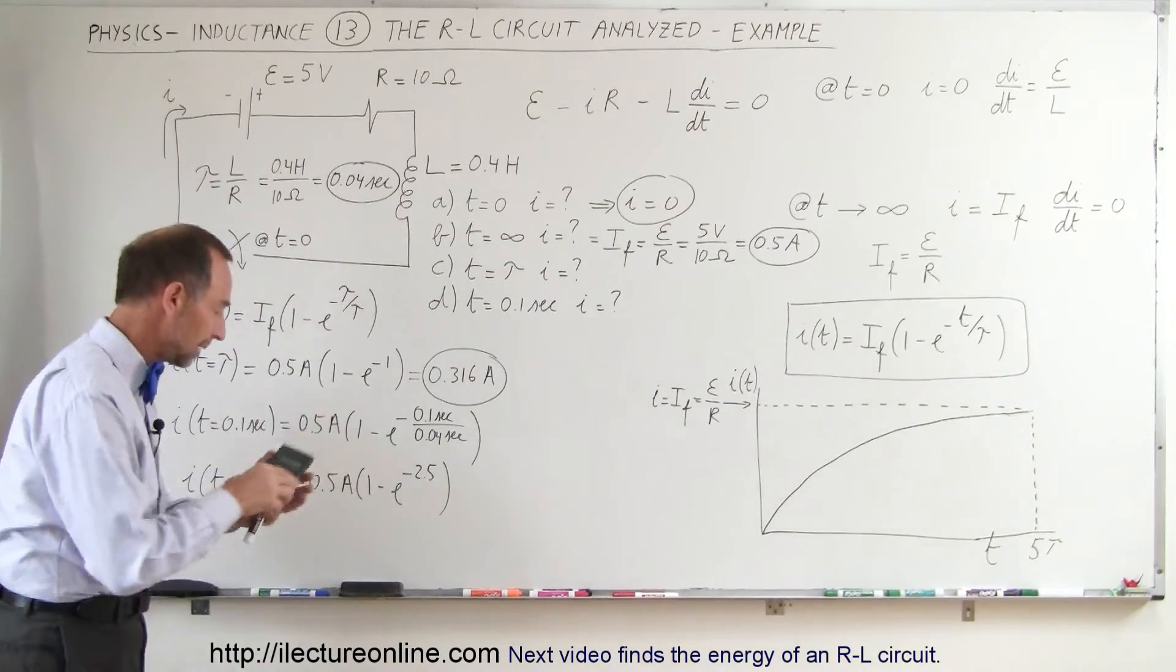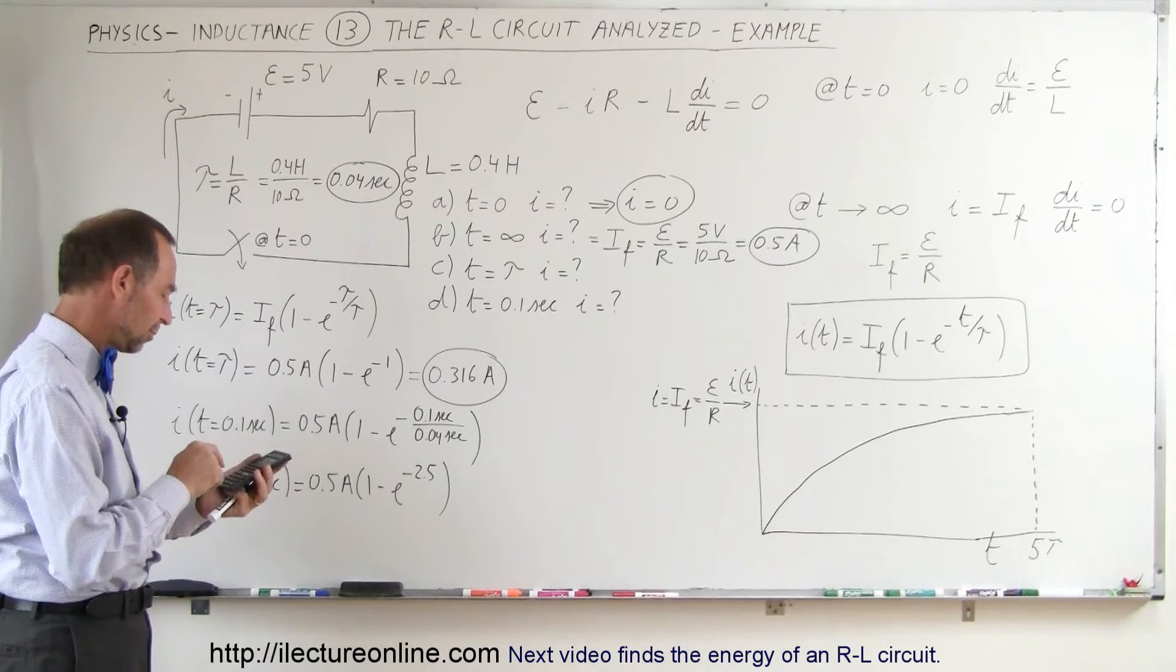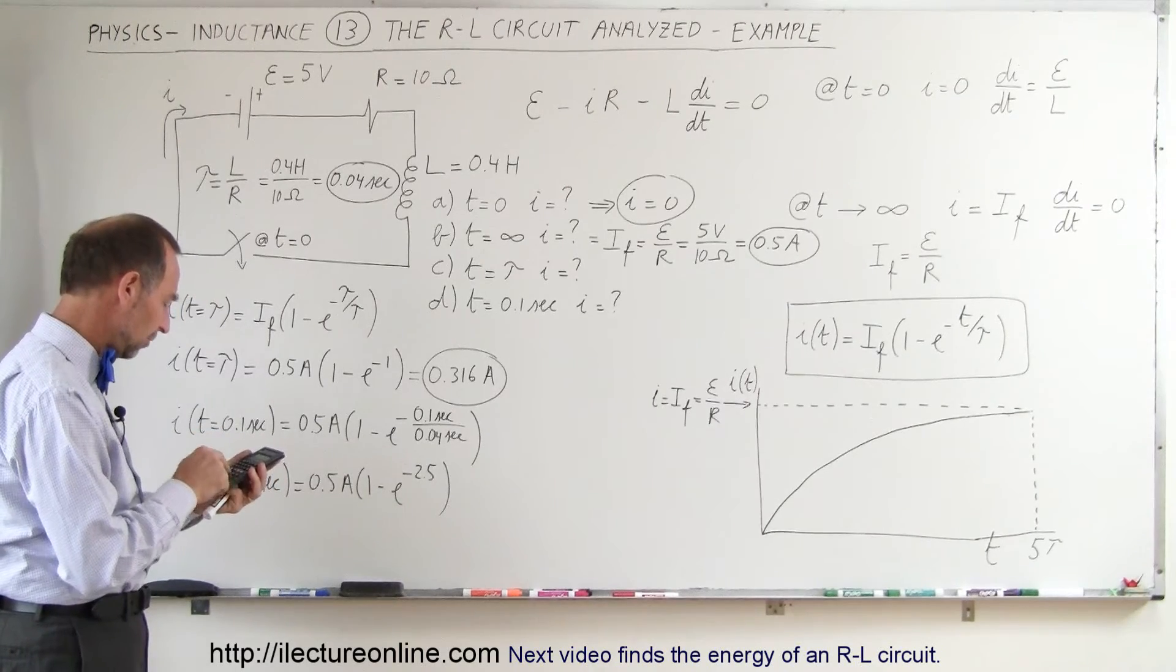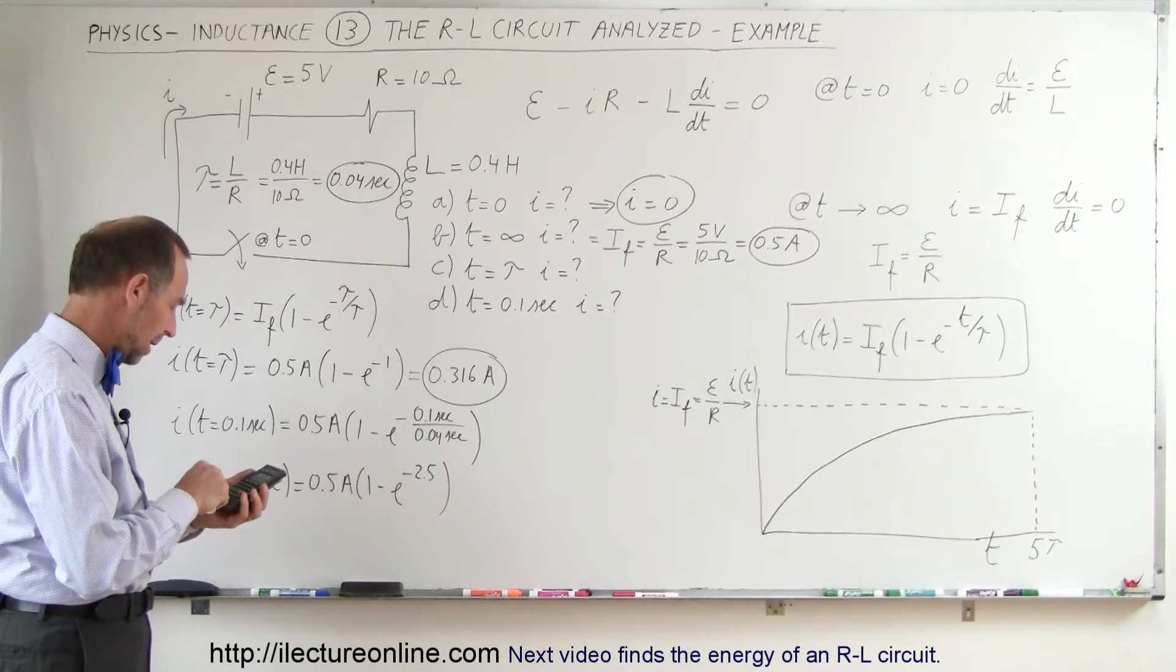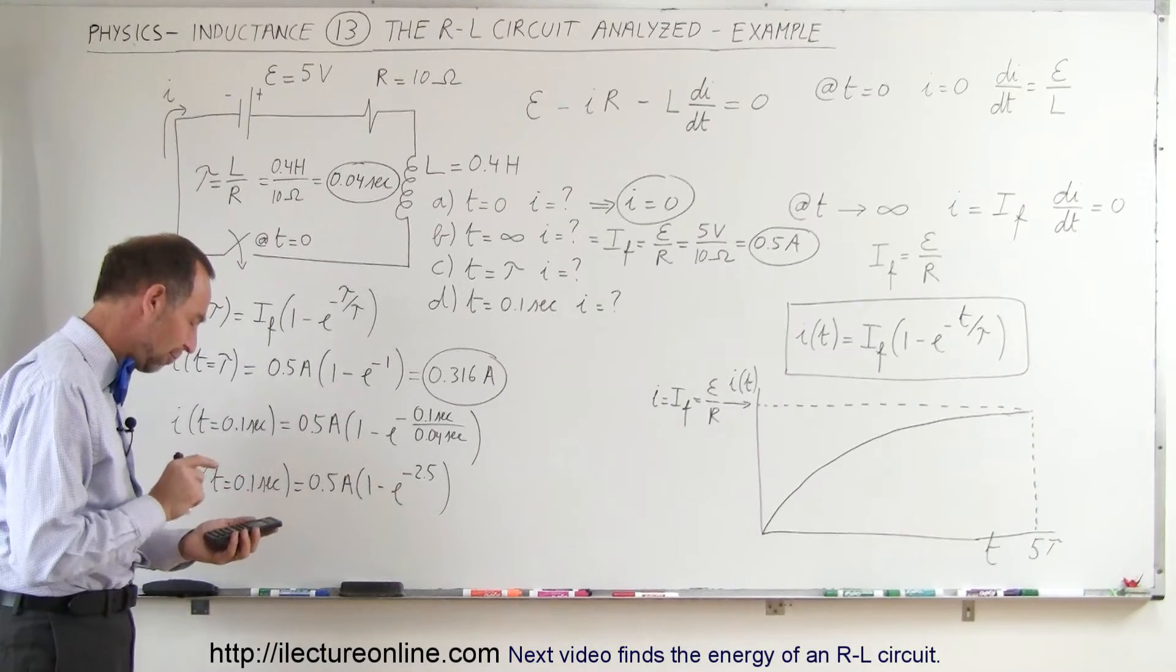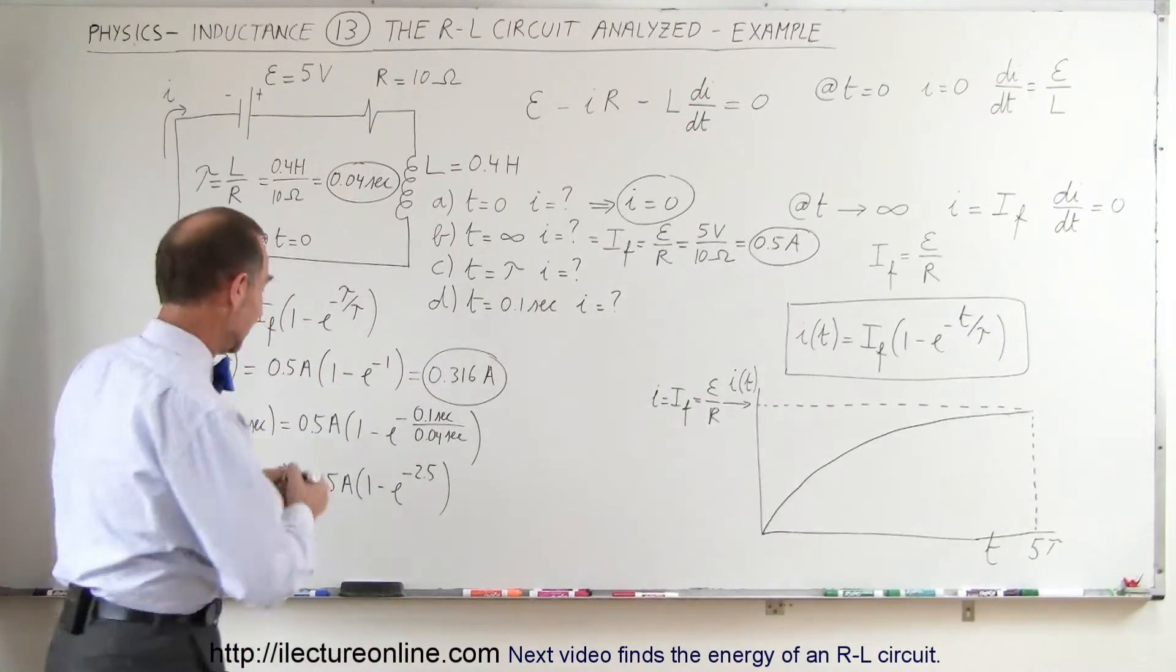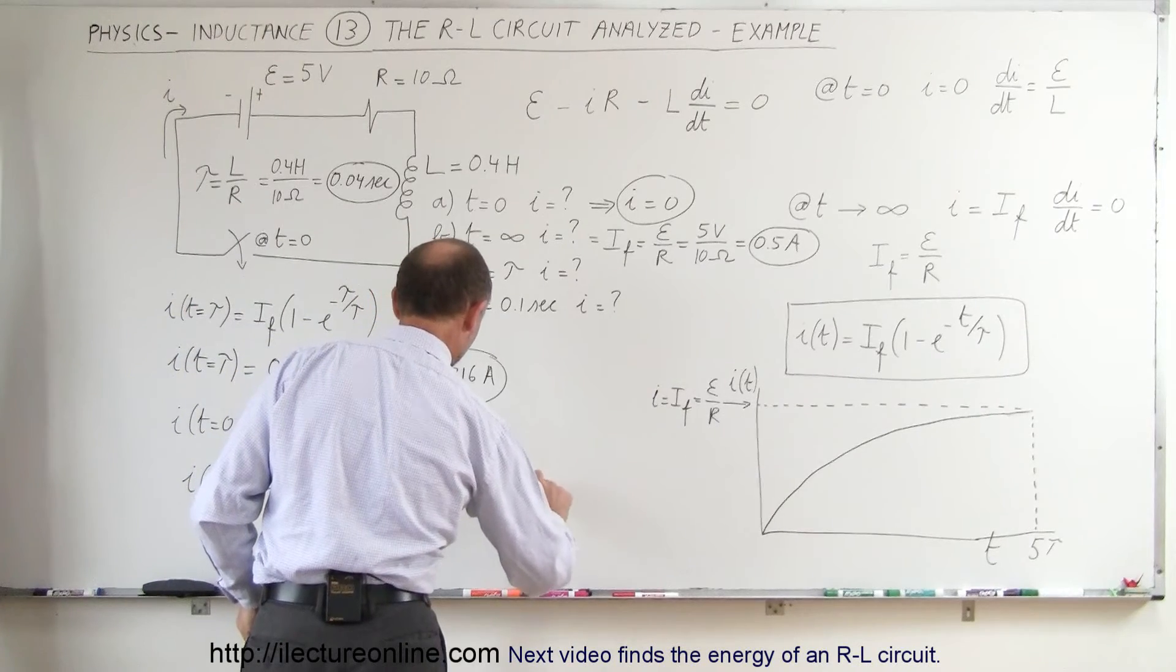And so now again, we take a calculator, go 2.5, make that negative, that becomes the exponent. Subtract that from 1, and we multiply that times 0.5, and we get 0.459. So that would be equal to 0.459 amps.